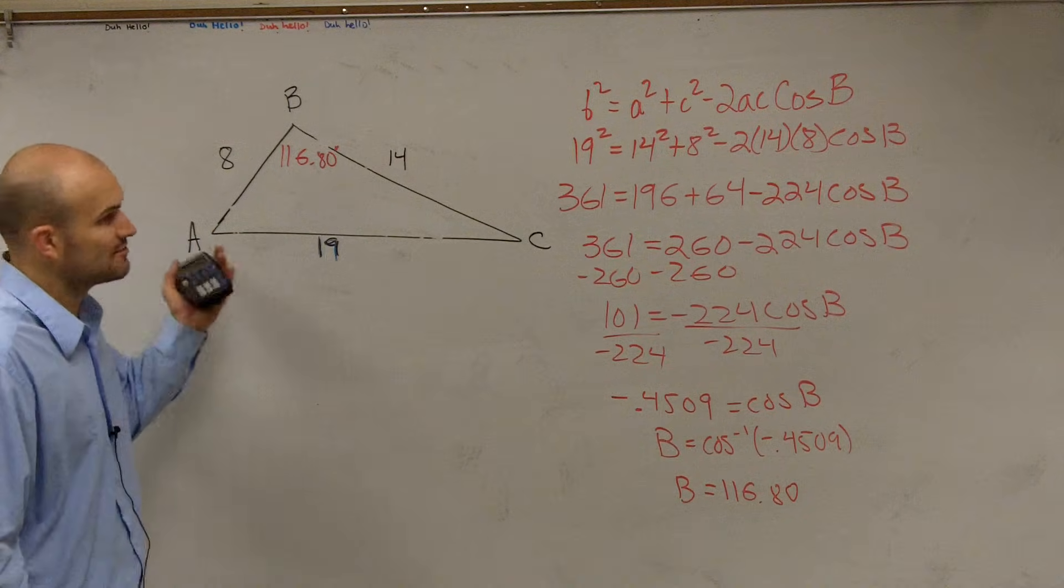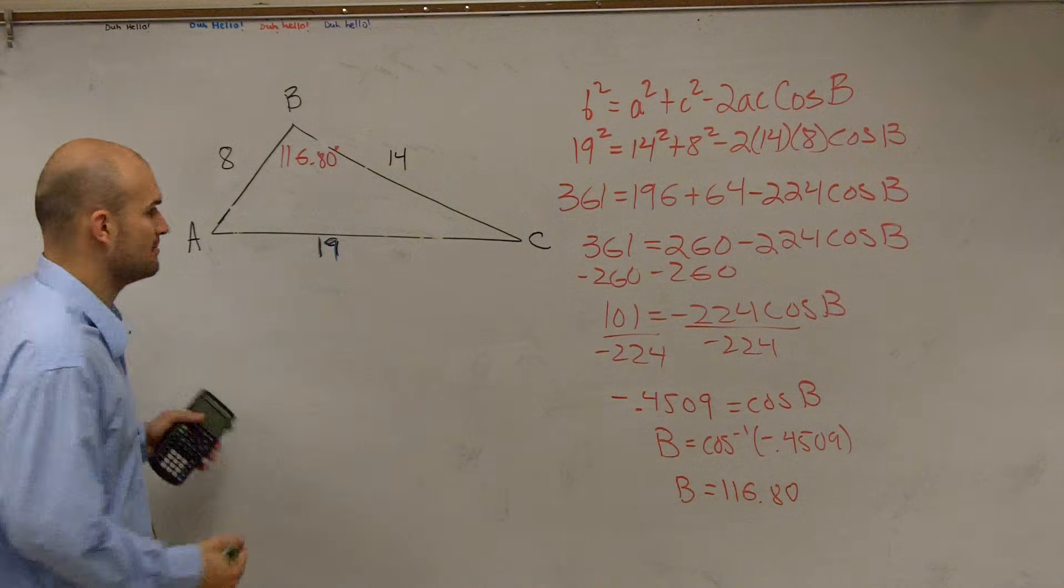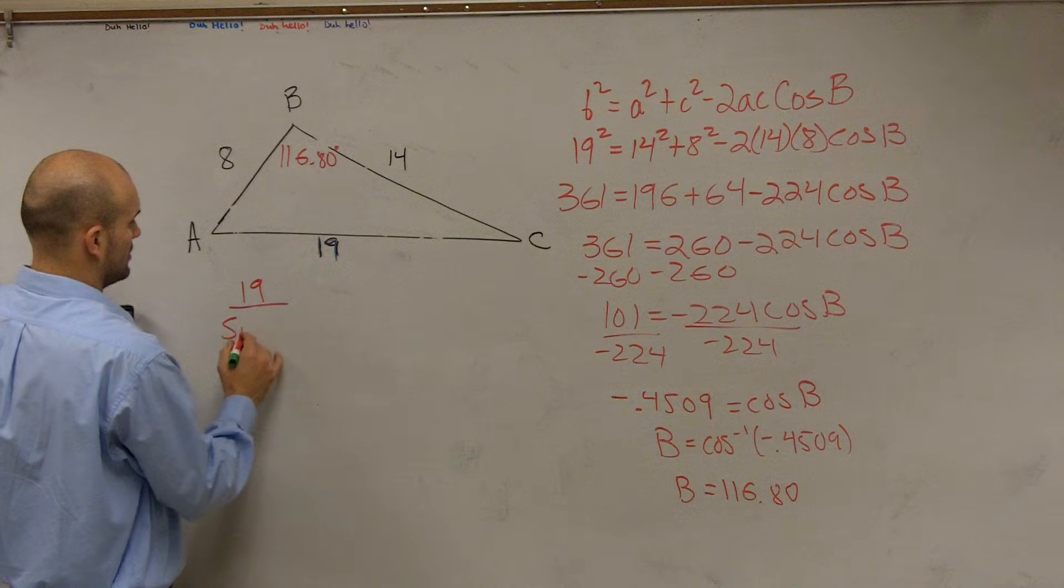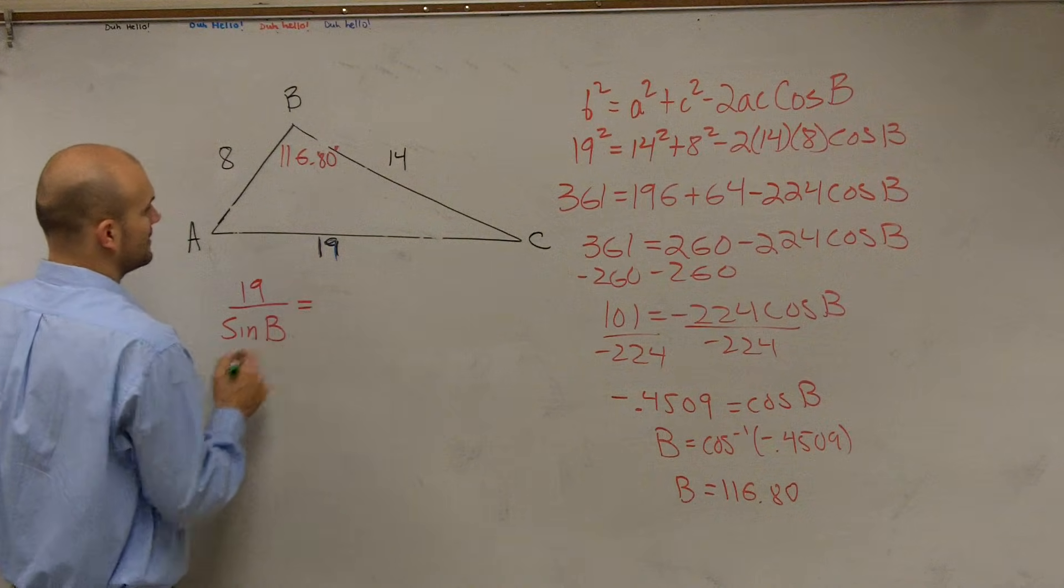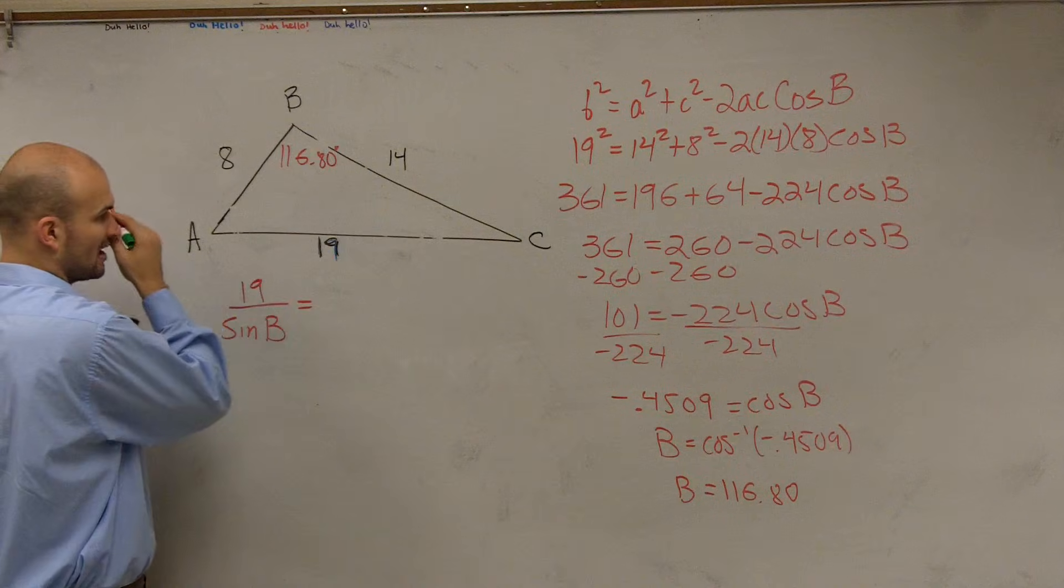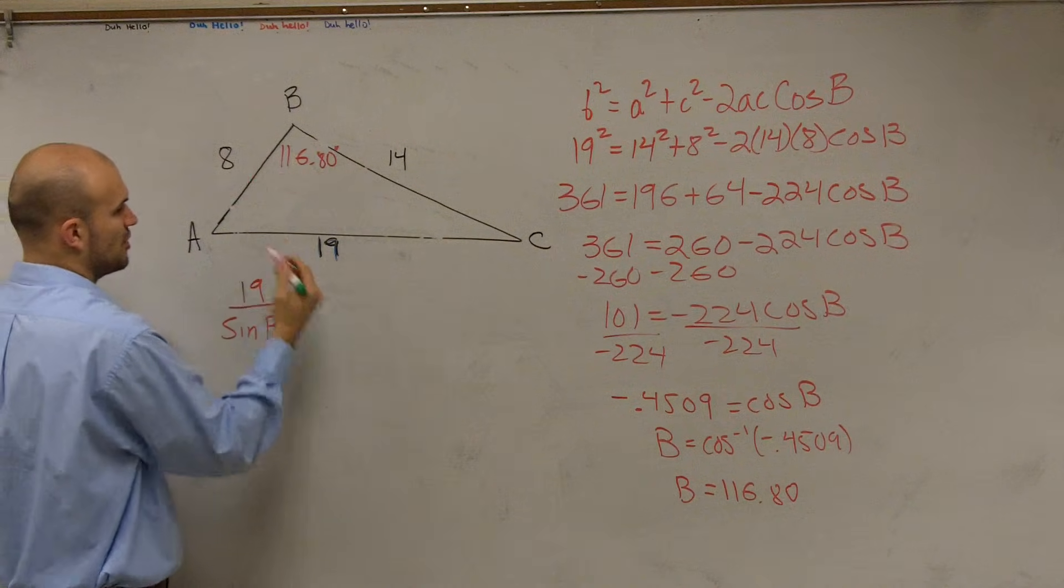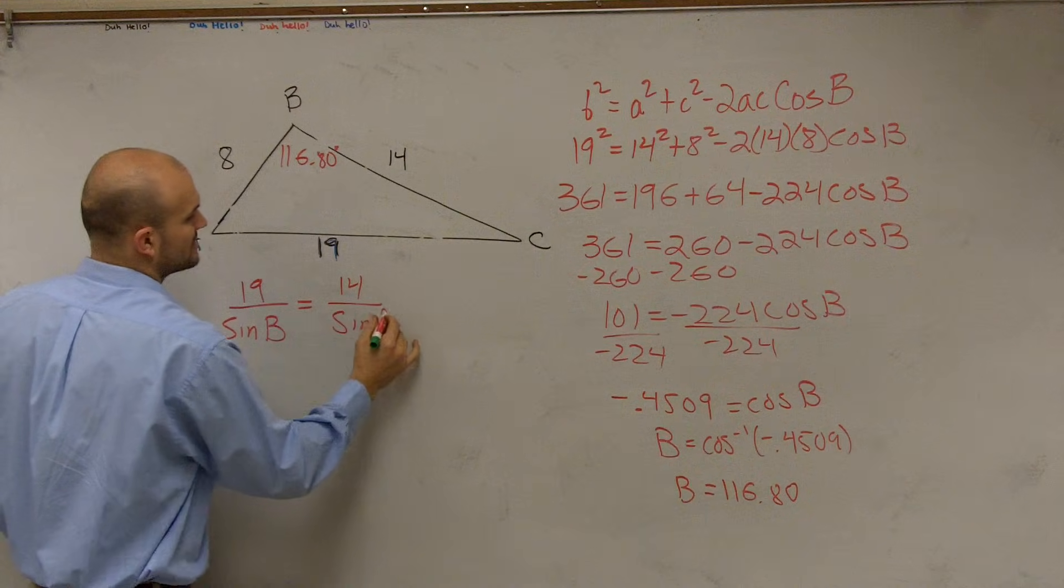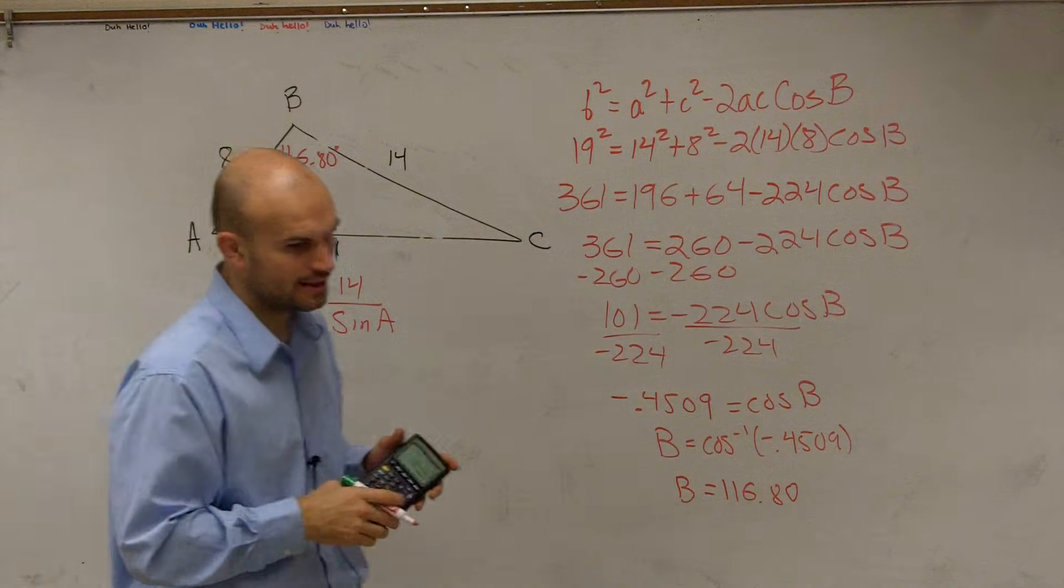So now we need to apply the law of sines and we can figure out either one of these angles. It doesn't really matter, but now I have a ratio so I could say 19 over the sine of B equals, and what you could look at this is let's just solve for A. So it's going to be 14 over the sine of A.